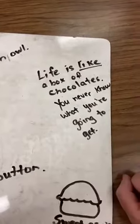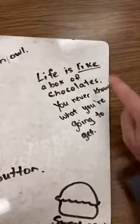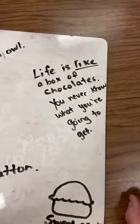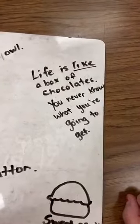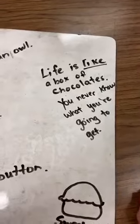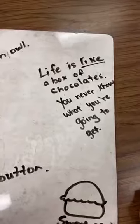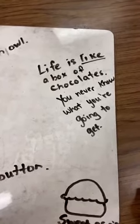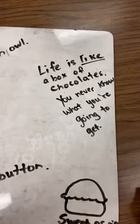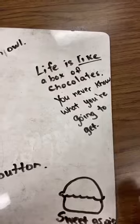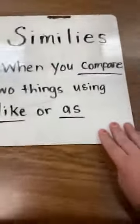The next example is using the word like: life is like a box of chocolates — you never know what you're going to get. Basically that's saying that your life, you don't know what's going to happen. And in a box of chocolates, when you pick it up, do you know what kinds of chocolates you're going to get? No, not really. So life is like a box of chocolates — you never know how your life is going to turn out.